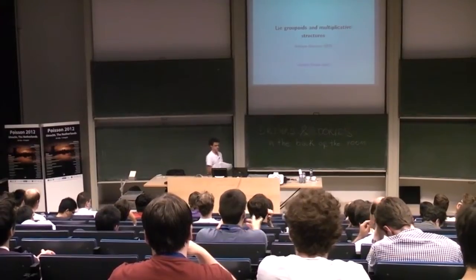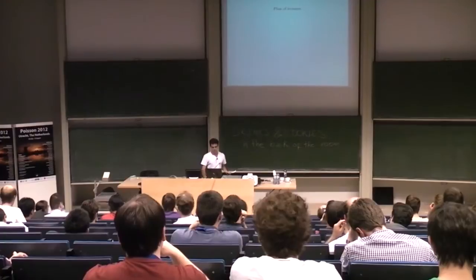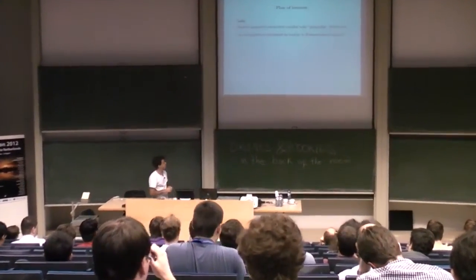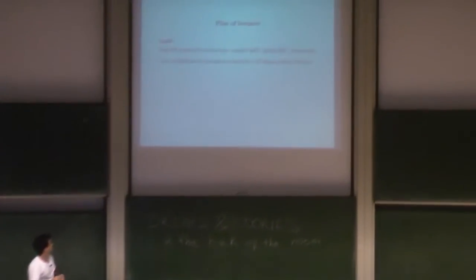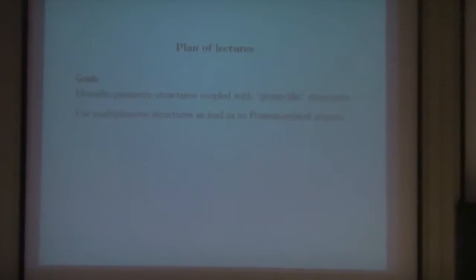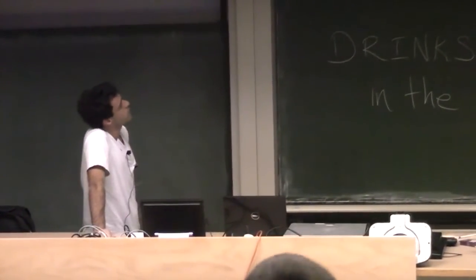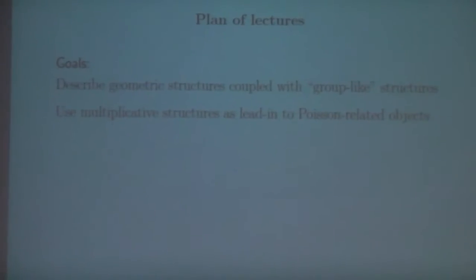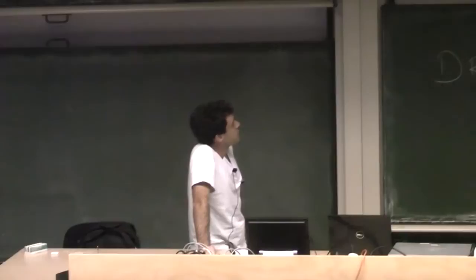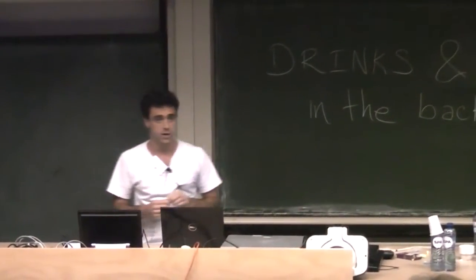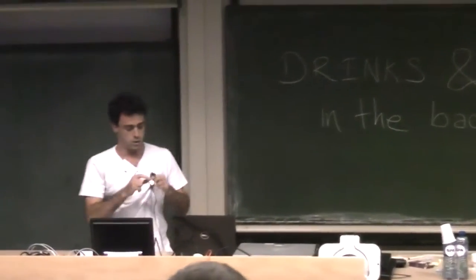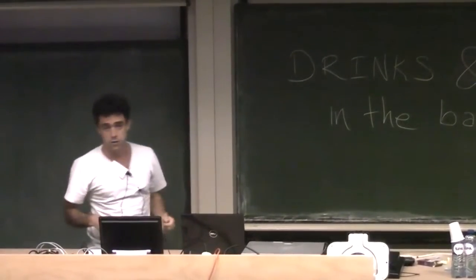Let me start by telling you a bit about my goals. There are two things I would like to discuss in this series of lectures. The first one is to describe a number of instances in which geometrical structures are coupled with group-like structures. By group-like here I will mean only Lie groupoids. I'll be interested in the interplay between these geometrical structures on group-like groups and their infinitesimal counterparts, the infinitesimal geometry associated with them.